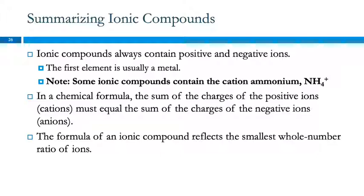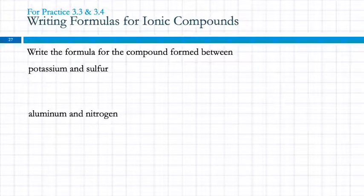Ionic compounds always have positive and negative ions — you can't have two positives or two negatives because like charges repel. The first element is usually a metal. The only exception is if the compound starts with NH4, which is ammonium — the only polyatomic cation you need to remember. When making chemical formulas, the sum of the charges must equal zero, or equivalently the total positive charge must equal the total negative charge. The formula is always the smallest whole number ratio.